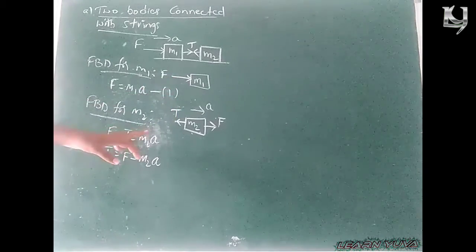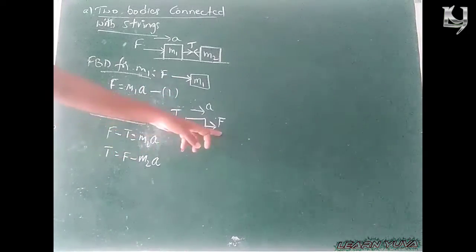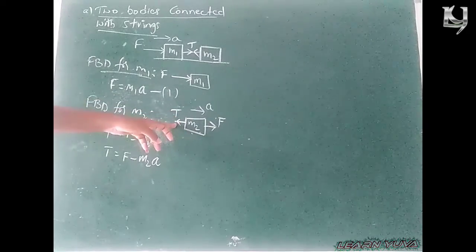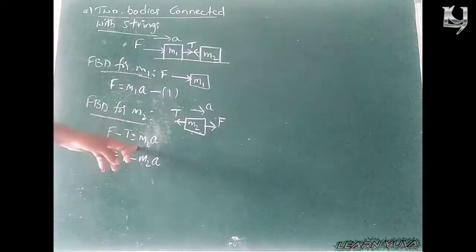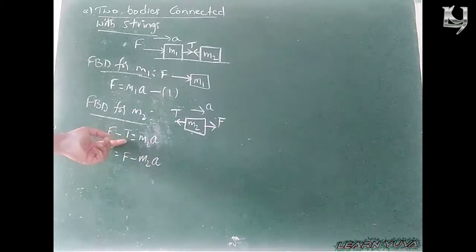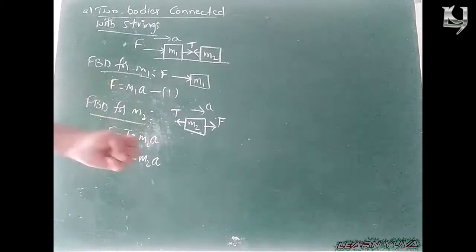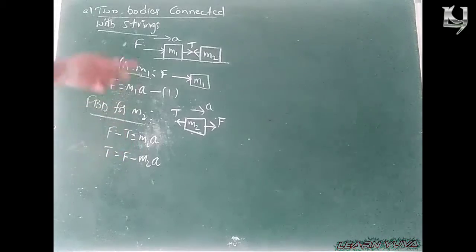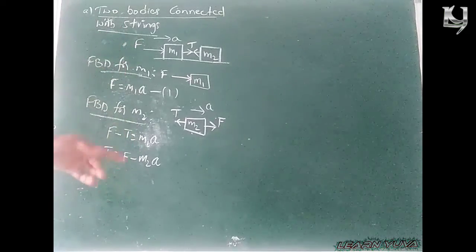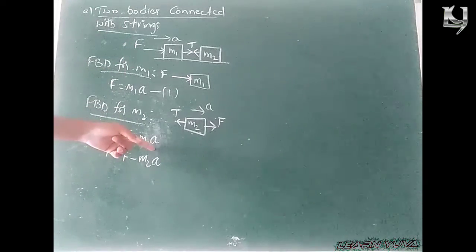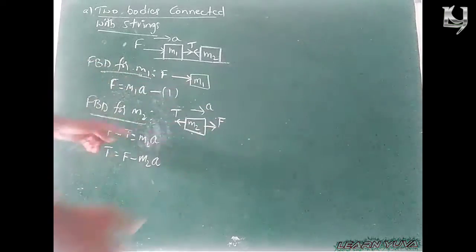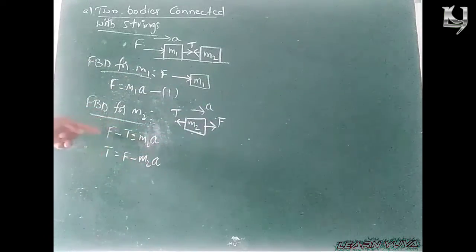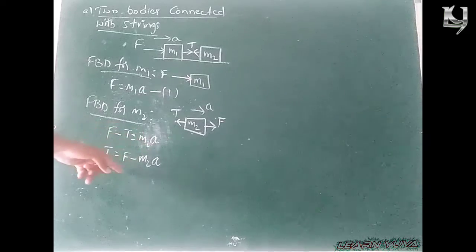Remember: F minus T — large force minus small force — is equal to M2·A, which is the net force. We need the tension force T. In this problem we have to calculate both the acceleration and the tension force. So, F minus M2·A is equal to T.